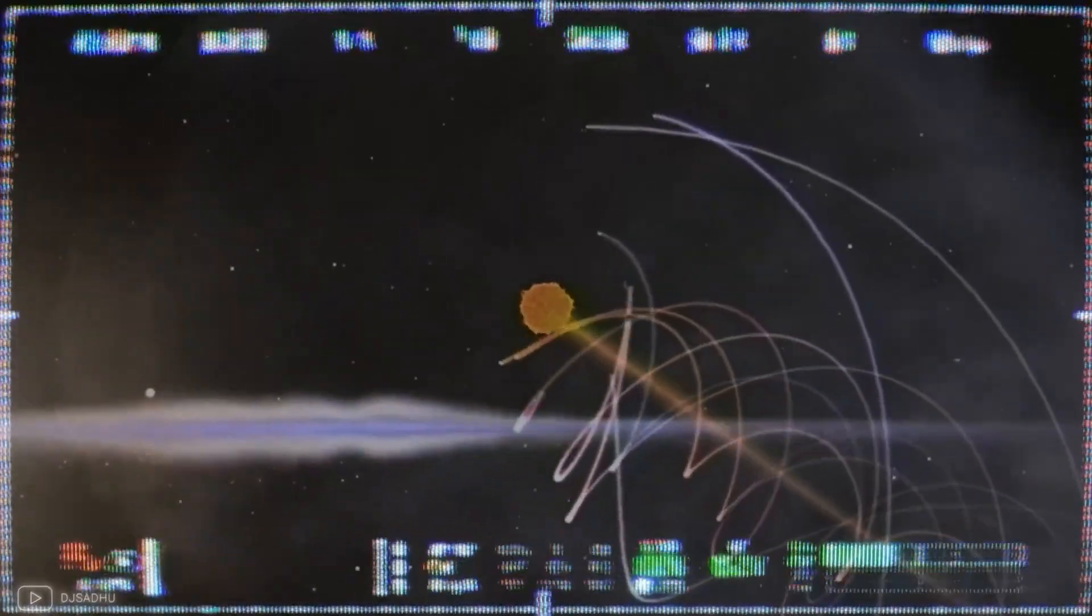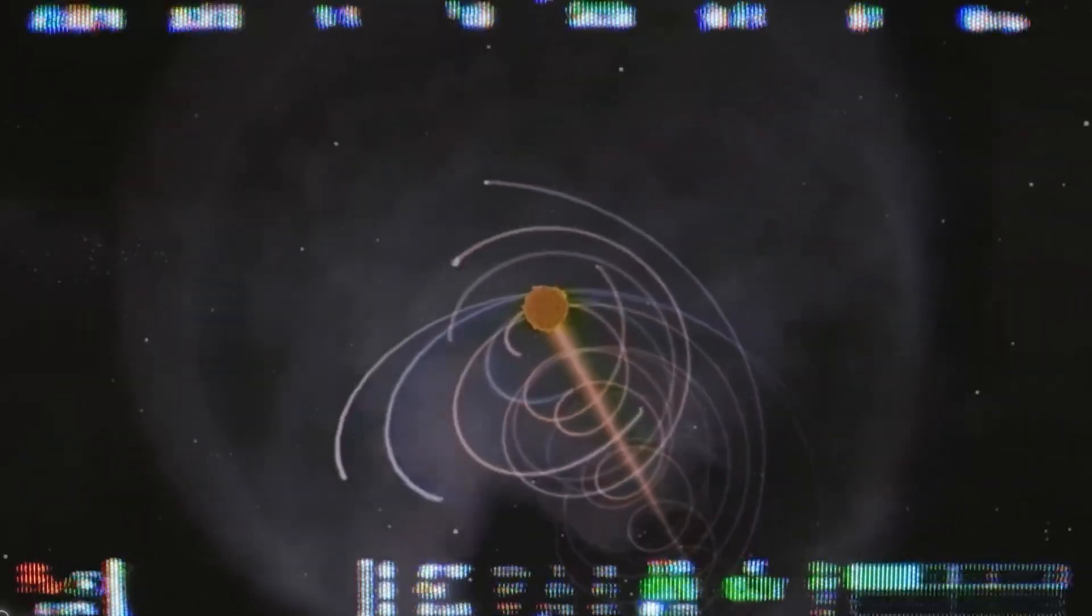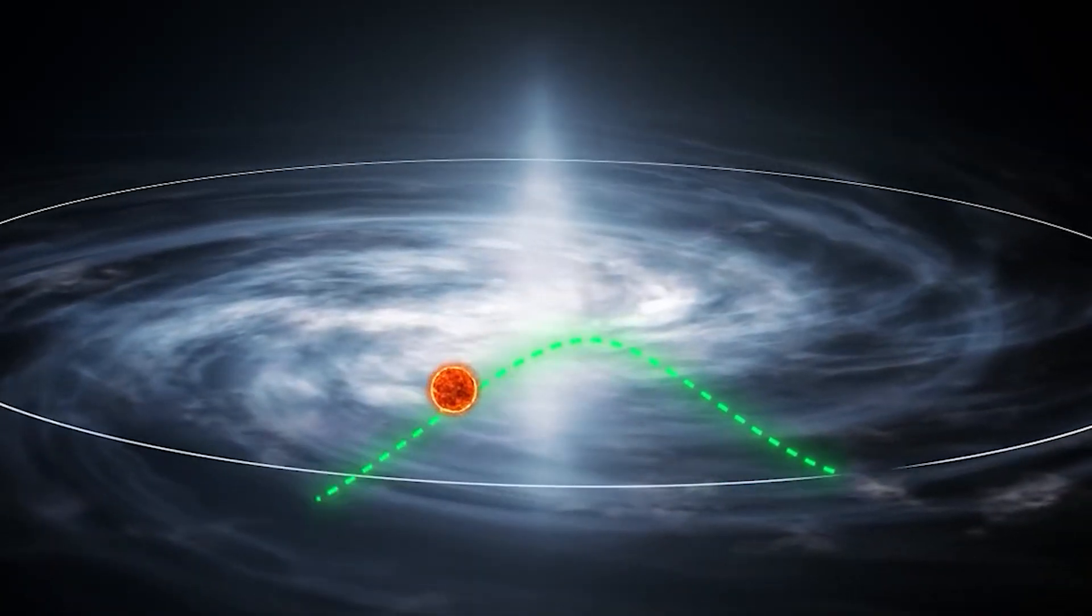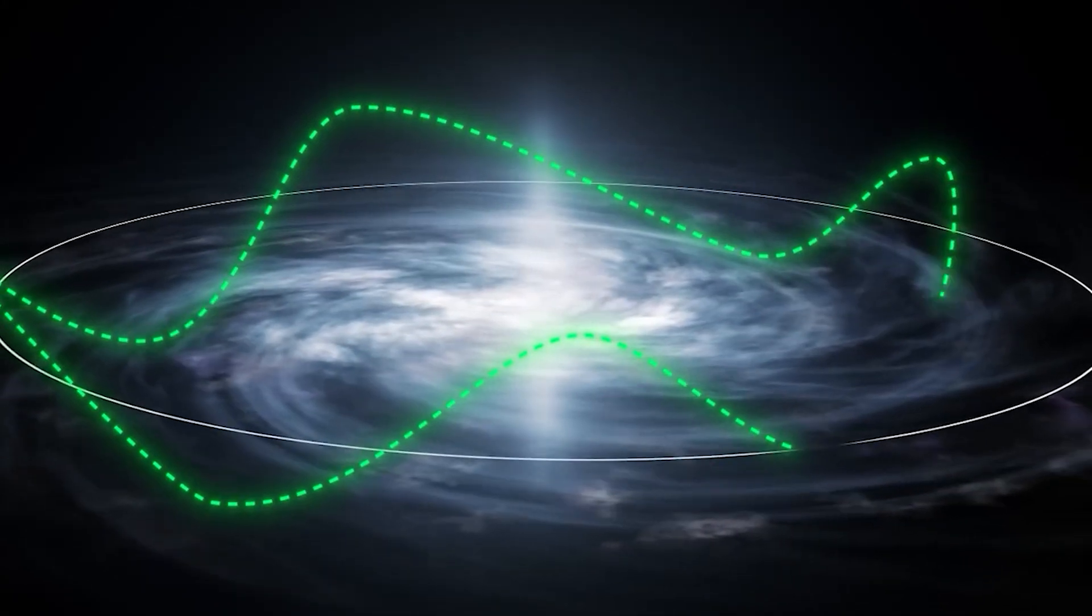Rather than a perfect circle, the sun's orbit around the galaxy's center is slightly elliptical, oscillating above and below the galactic plane in a cycle that completes roughly every 60 million years.